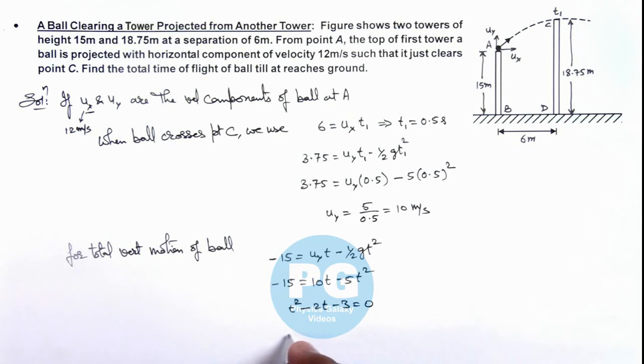Which we can solve and get the value of time which is 2 plus minus root of this is 4 plus 12 divided by 2. On simplifying we are getting the value of time as 3 seconds. As here we can ignore negative sign as time cannot be negative, so this is the final result of our problem.